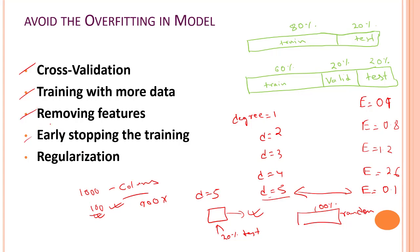Early stopping the training is also a good example that you can do to avoid overfitting in a model. Then you can do regularization. We'll talk about regularization much later in the course.